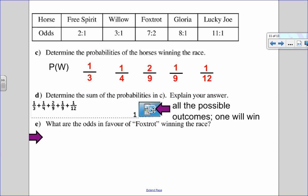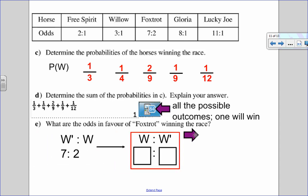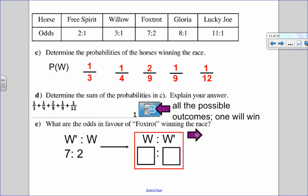Okay, last question here, it says what are the odds in favor of Foxtrot winning the race? Remember, these odds were all listed as against. So Foxtrot right here has seven to two odds against which means not winning to winning. If I want odds in favor, I just flip those around to be winning to not winning, which would be two to seven.